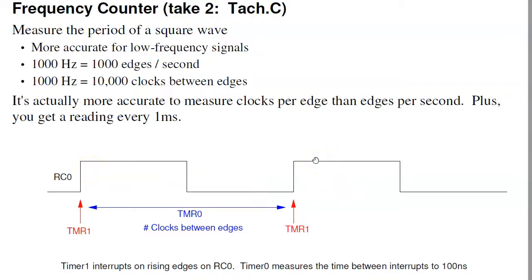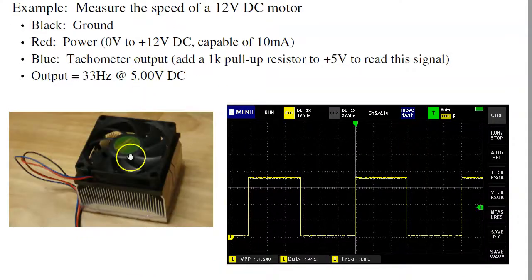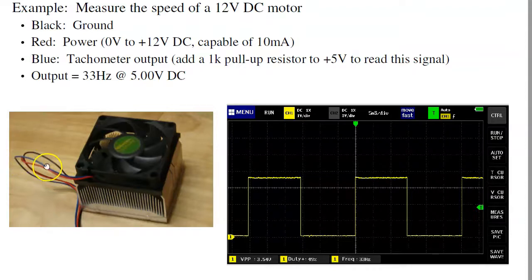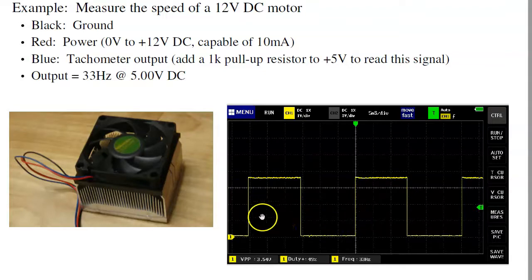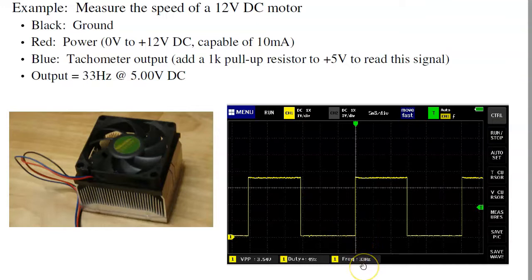Plus, if I measure the time between edges, I get a reading every edge — every millisecond. Just a different way of doing it. One reason you might want to do that is these little DC motors. This DC motor has three wires: red is power, black is ground, and blue is the tachometer output. If you connect that to a 1k resistor to power, I get a square wave out. By measuring the time between edges, I can tell you the period. The frequency is only 33 hertz, so measuring edges per second gives only a resolution of 1 part in 33. Measuring the time between edges is much more accurate.